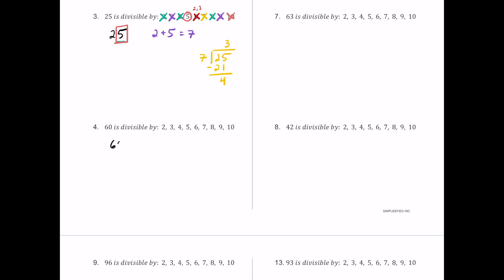For number 4, we have 60. The last digit is even so 2 works. Half of 60 is 30 — still even — so 4 works. Half of 30 is 15, which is odd, so 8 fails. For divisibility by 3: 6 plus 0 is 6, which is a multiple of 3 but not 9. The last digit is 0, so 5 and 10 both work. Since 2 and 3 both work, 6 works. For 7, 8 times 7 is 56 with a remainder, so 7 fails.